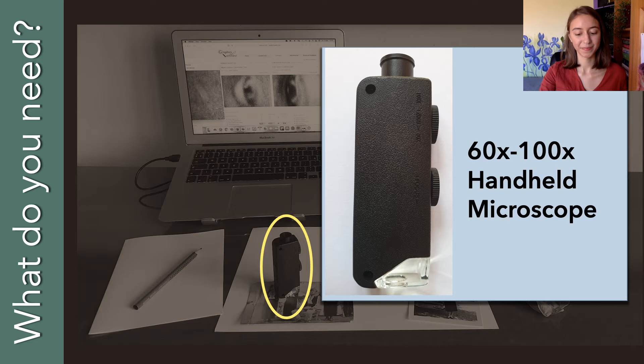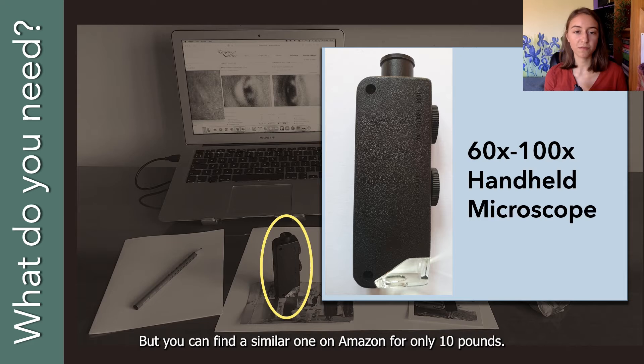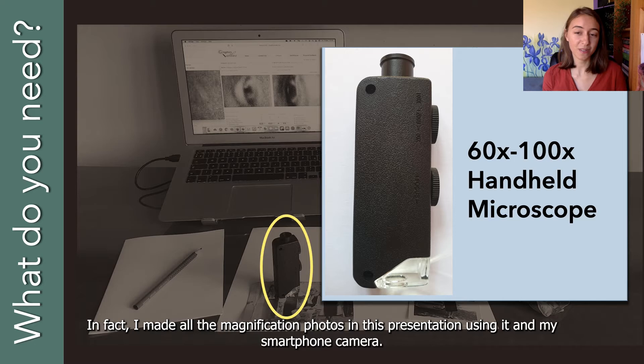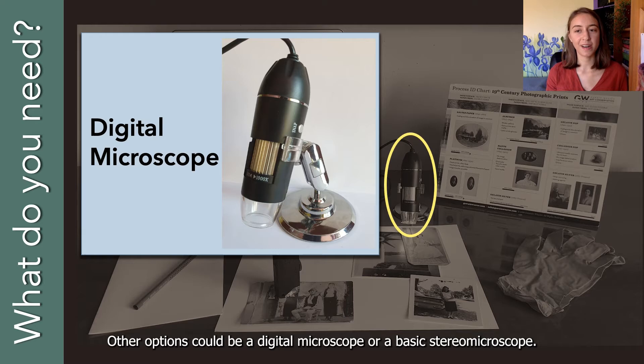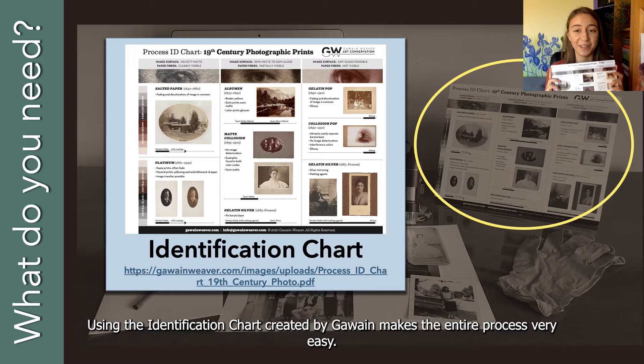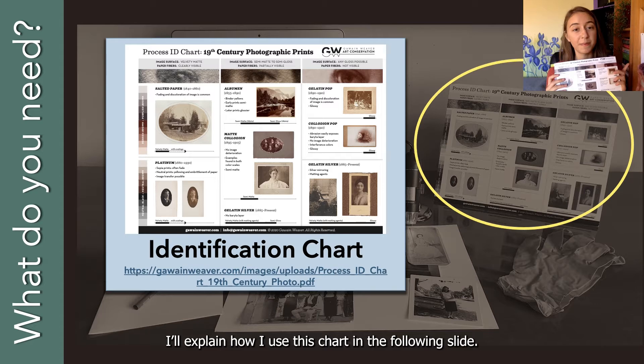More than that, you don't even need expensive equipment. The tool that I use all the time is this little handheld microscope that I received in the kit offered by the course, but you can find a similar one on Amazon for only £10. In fact, I made all the magnification photos in this presentation using it and my smartphone camera. Other options could be a digital microscope or a basic stereo microscope. Using the identification chart created by Gawain makes the entire process very easy, and you can download it from his website for free, as well as other very useful resources.